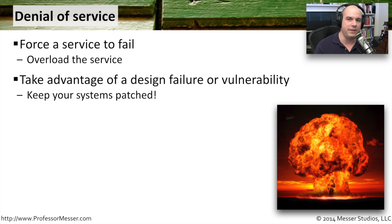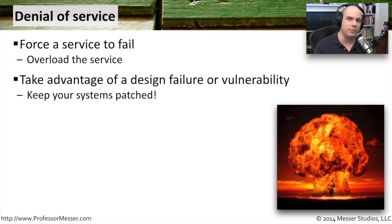Denial of service is also designed to take advantage sometimes of a very specific vulnerability. For instance, there may be a router — when a router receives a particular kind of packet, it doesn't know what to do with that packet, causing a problem inside the router's software and may cause the router to stop forwarding traffic. Router manufacturers have had to deal with this, and whenever they find a vulnerability like that, they patch it very quickly. But the bad guys know about these vulnerabilities, and if they find an unpatched router, they may exploit that design failure and completely bring that router down, requiring a reboot.